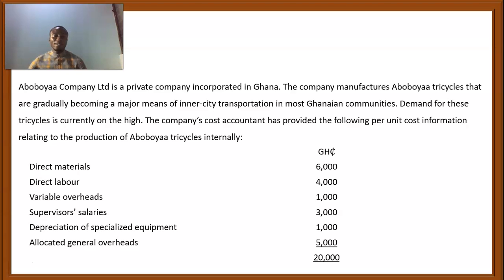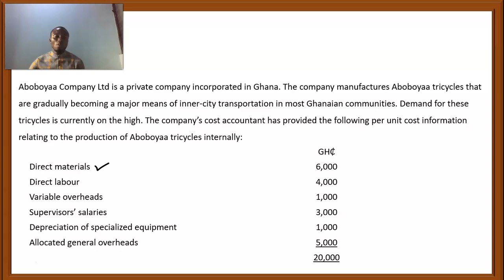Direct materials are avoidable costs because if you don't produce any Abubo Yar, you are not going to incur any expenditure on materials. Direct labor is also in direct proportion to the production of Abubo Yar in-house, so that one is also avoidable. Variable overheads — the fact that they are variable means they vary in direct proportion to output, so they are also avoidable.